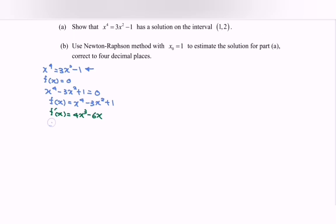Next, substitute to find f(1). If we substitute 1, we have 1 minus 3 plus 1, which gives us negative 1.